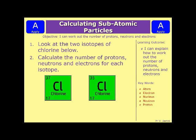Okay, let's see if you're right. So, this is worth 6 marks. So, 1 mark for each of the protons, neutrons and electrons for each isotope.